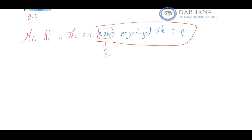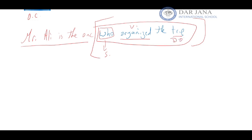The complex sentence has two clauses: 'Mr. Ali is the one' is the independent clause, and 'who organized the trip' is the dependent clause. Within the dependent clause, 'organized' is the verb, 'the trip' is the direct object, and 'who' is the subject. Therefore, I use the nominative case — 'who.'